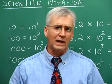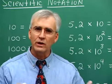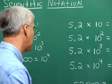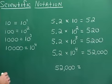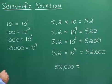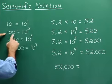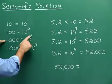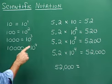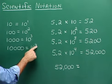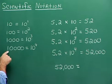Let's talk about what happens with tens and hundreds and thousands and how we can rewrite them using exponents. This is just a backdrop for writing numbers in scientific notation. We know that ten is ten to the first power. One hundred is ten squared, one thousand is ten cubed, and ten thousand is ten to the fourth power. The exponent on ten corresponds with the number of zeros that follow the one.